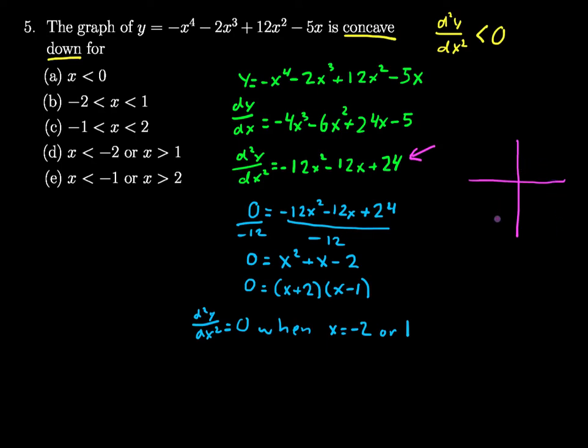And in addition to that, I can see that I have zeros at negative 2 and positive 1. Let's see if I can draw this, a parabola that looks like that. And from here, it should become pretty obvious that